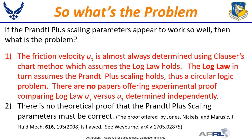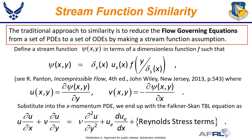You would think that some group would have verified the Klauser method for obtaining the friction velocity by comparing to some other independent determination of the friction velocity, but as far as I can tell, this has never been done. Secondly, there is no theoretical proof that the Prandtl Plus scaling parameters must be correct. No one has offered a theoretical proof that the Prandtl Plus parameters must scale the inner region of a turbulent boundary layer. There has been no proof to date. So let's see what we can do. The traditional theoretical approach to similarity begins with the flow governing equations: conservation of mass, momentum, and energy.